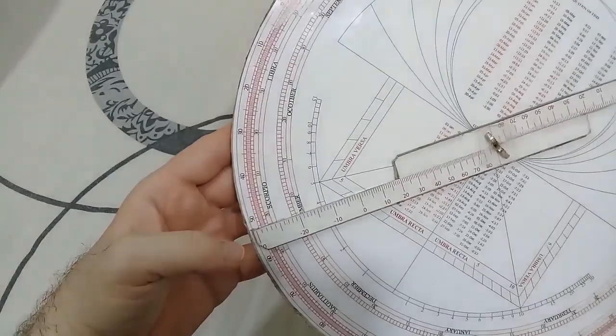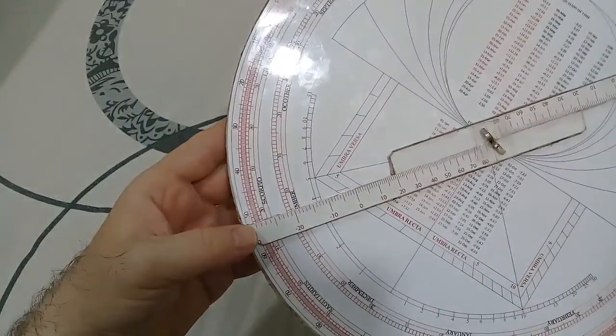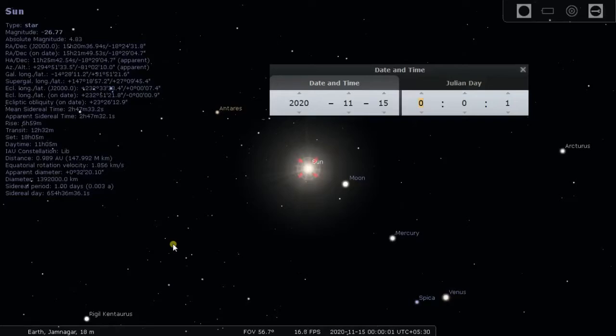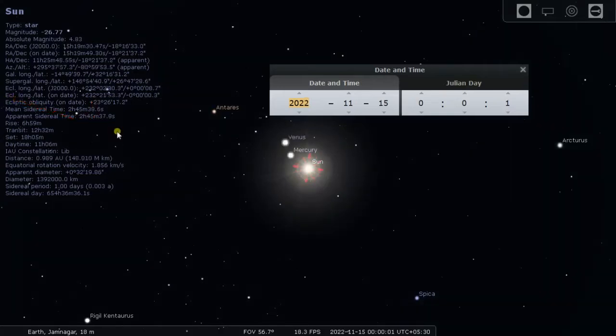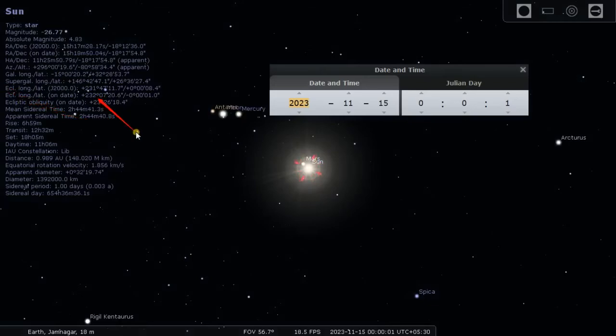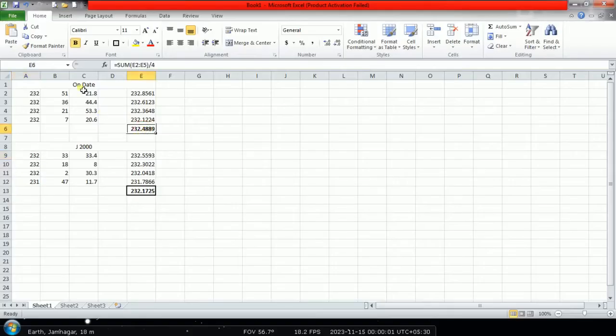Now let's compare it with Stellarium. For 2020, it is 232 degrees 51 minutes. For 2022, 232 degrees 21 minutes. And for 2023, 232 degrees 7 minutes. The average is 232.48 degrees, and for epoch 2000 it is 232.17 degrees.